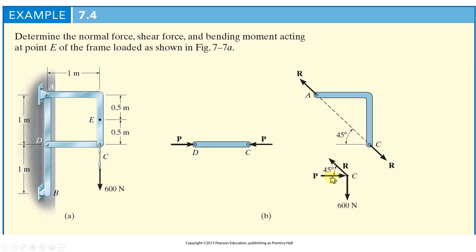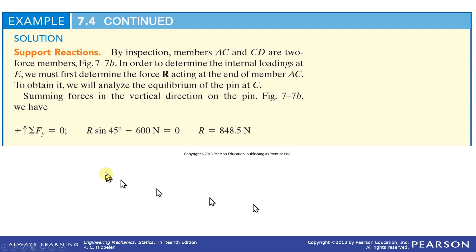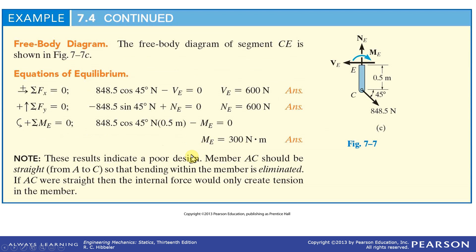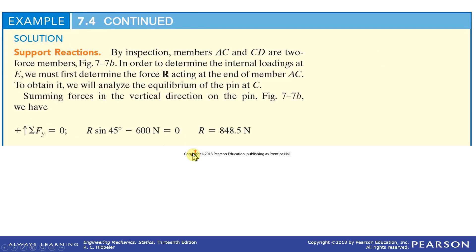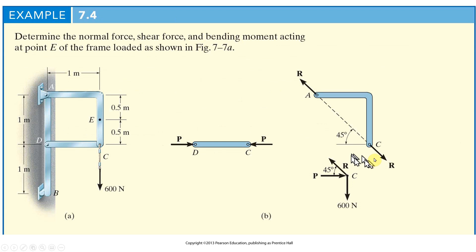So R times the sine of 45 is going to have to equal 600. And then P is going to have to be equal and opposite to R cosine 45, which would be 600 newtons. P is that—P would have to be 600 newtons. 0.707 R would have to equal 600 newtons. Okay, so at 45, R—P is going to have to equal 600. Does it say? No, it doesn't say. You don't need it, actually. You don't need P.